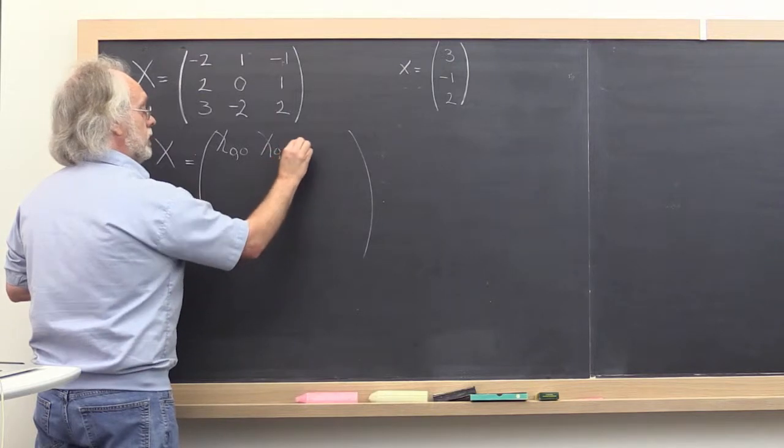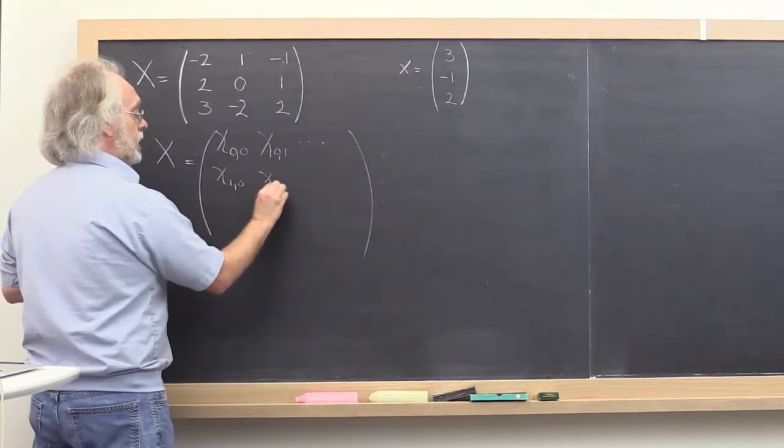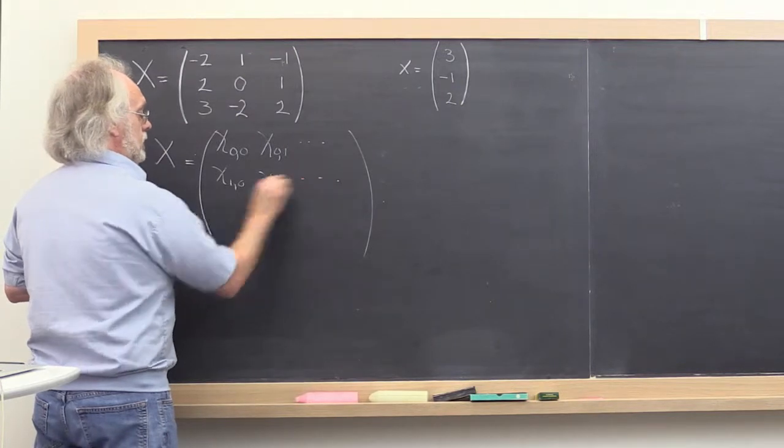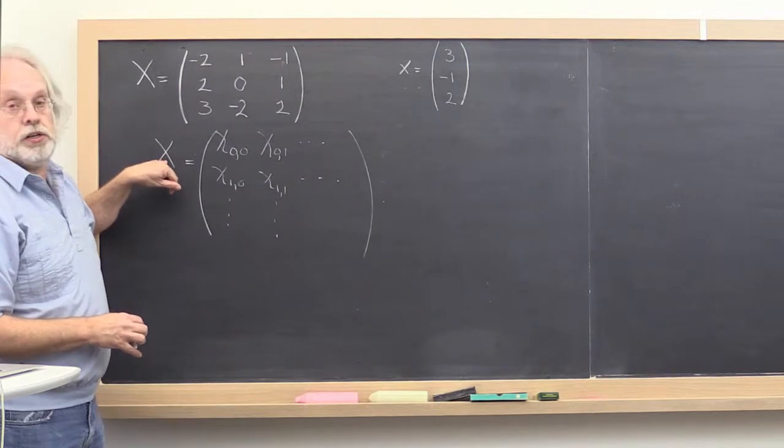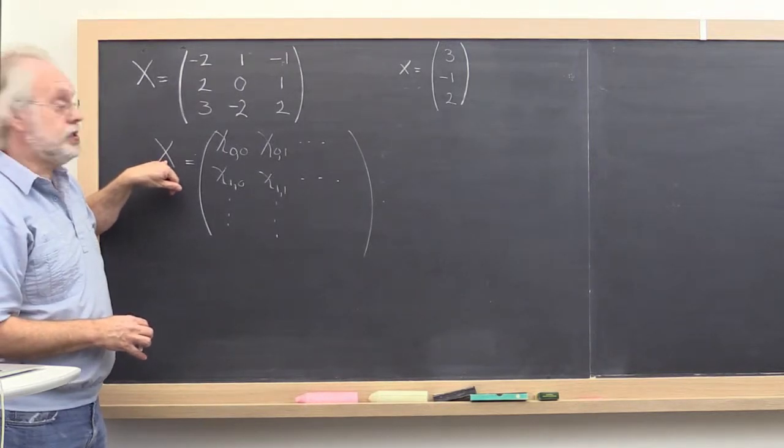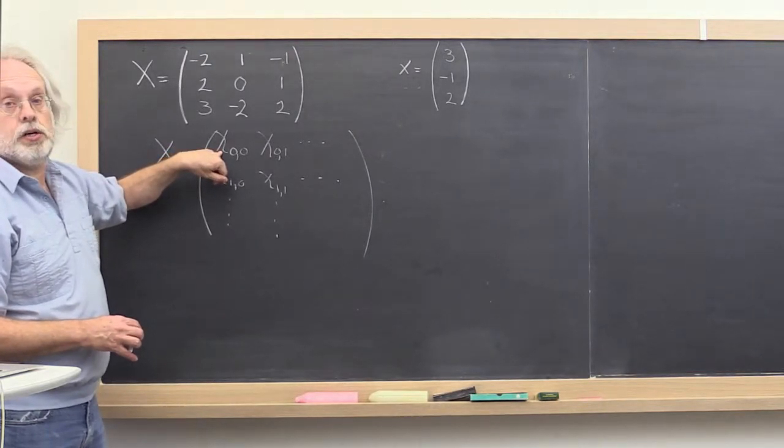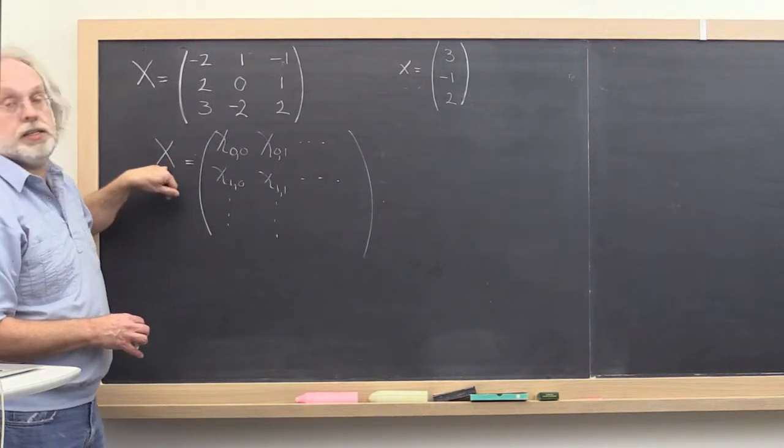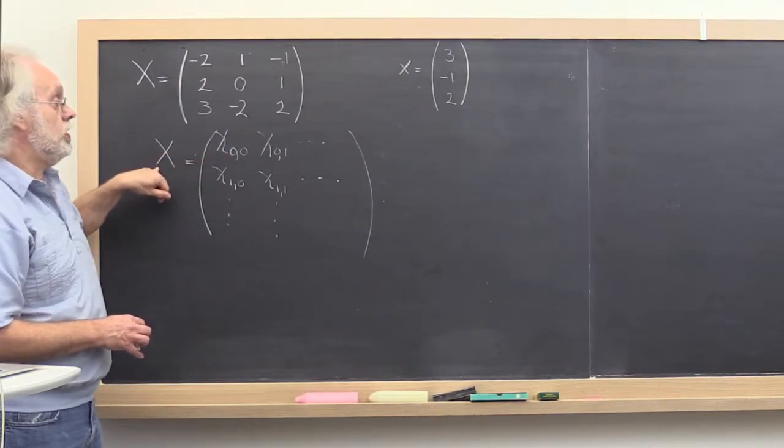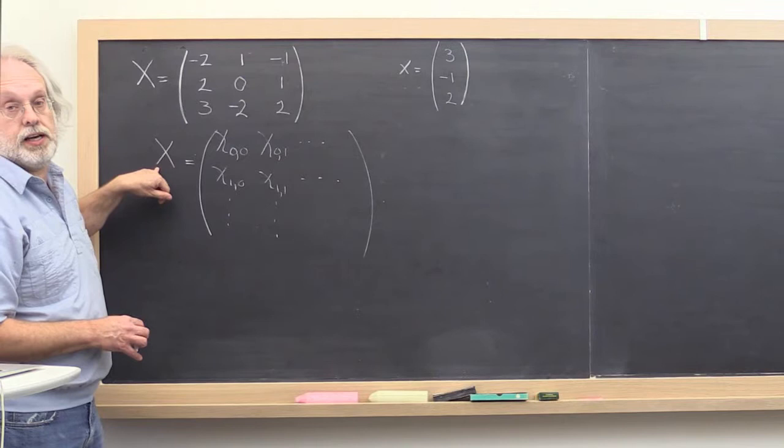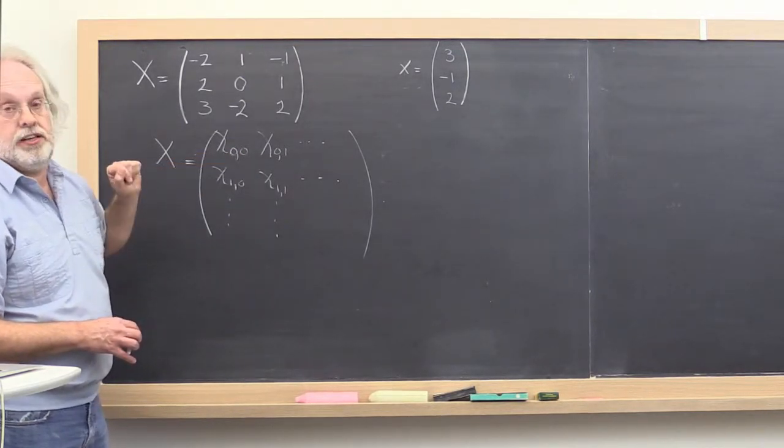And then we index that as chi 00, chi 01, and so forth. And then chi 10, chi 11, and so forth. Now what's going on here? Roman letter, uppercase letter x, Greek lowercase letter chi to represent its entries. If you see chi, then you should think, oh, that must be an entry of matrix x, if it's indexed with an i and a j index.